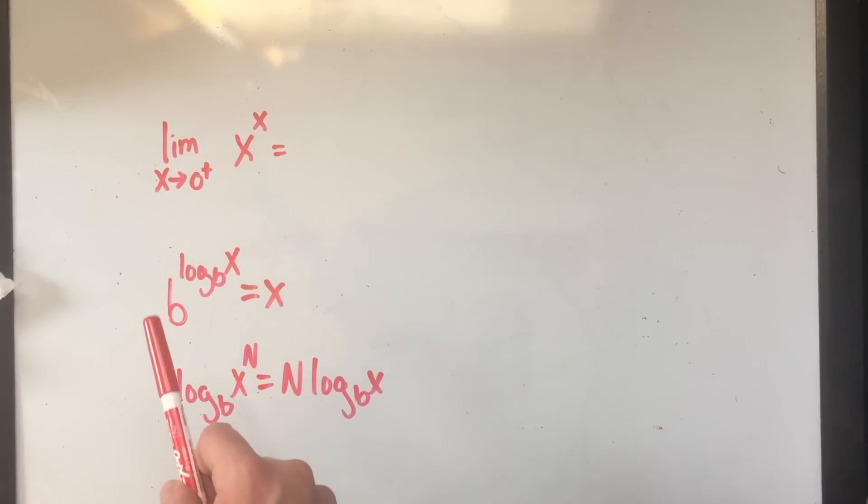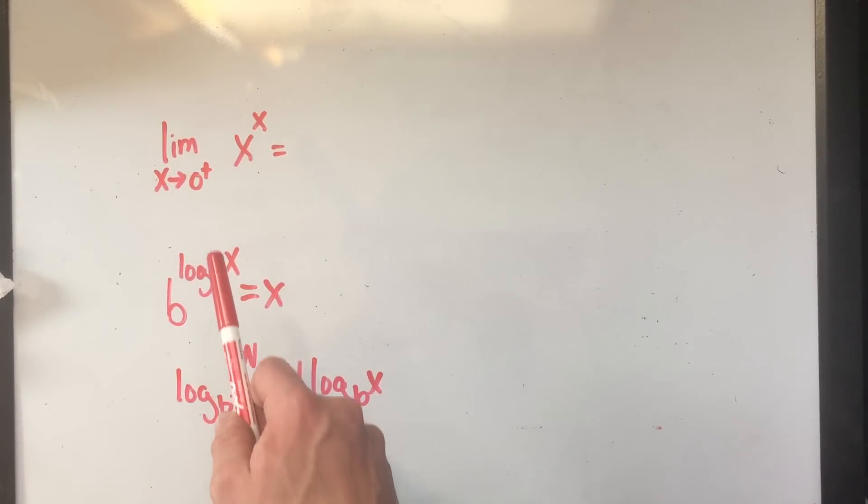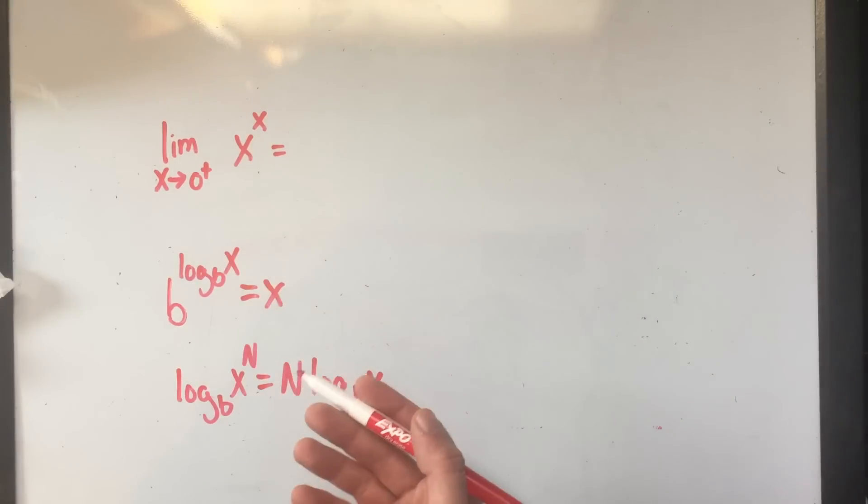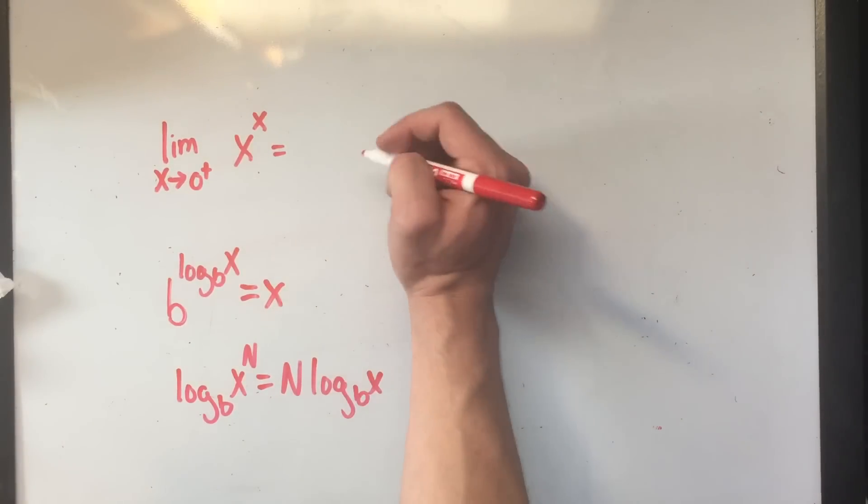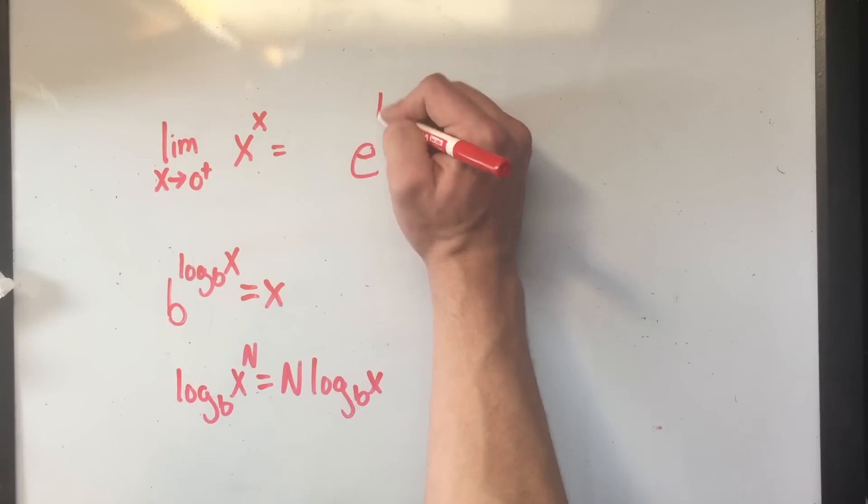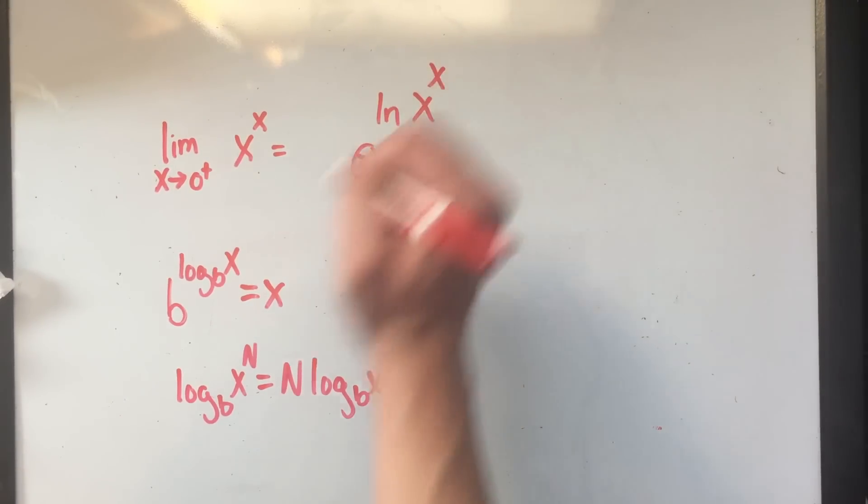Now, you're used to using b to the log base b just kind of cancels and you get whatever's on the inside. But I'm going to work backwards, I'm going to start with x, or in this case, x to the x. And I'm going to insert a b to the log base b. And I'm going to use the natural logarithm and e. So e to the ln of x to the x.